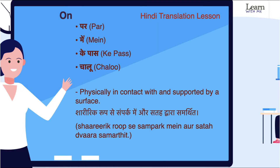ON means PAR, MAIN, KE PAS, or CHALO. ON means which is physically in contact with and supported by a surface — SHARERIK ROOP SE SAMPAK MEN OR SATYA DWAARA SAMATHIT HOUNA — usko hum ON kehtay hain.